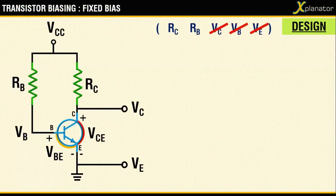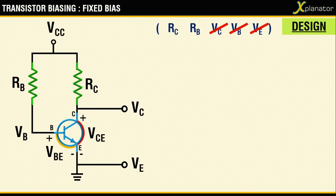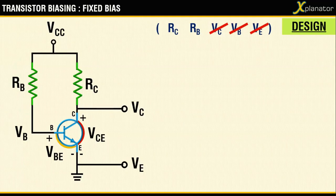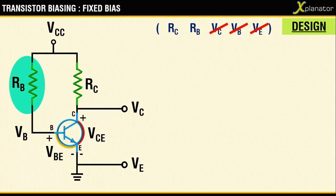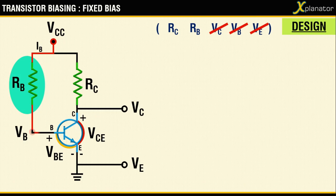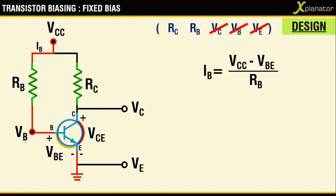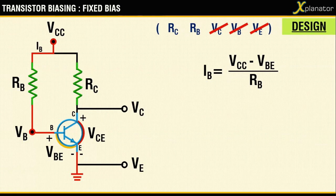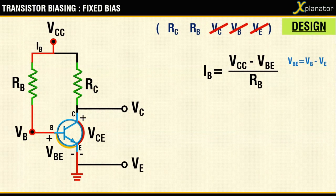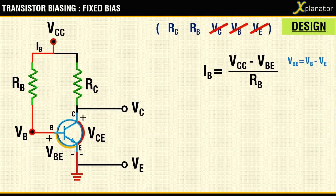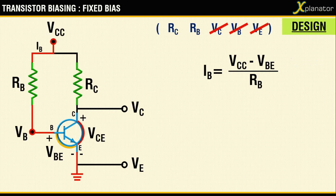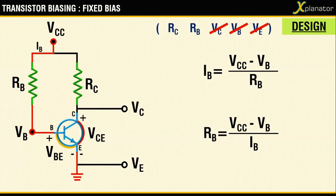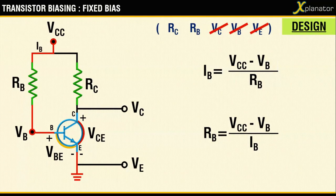Now moving over to the resistances, the expression for RB can be found out if you write a KVL equation for the input loop, which can be written as (VCC - VBE) upon RB. And from the previous slide, you know that VBE is a difference of VB and VE. So the VBE term can be substituted as just VB, and hence recomputing, you get the expression for RB as shown here.